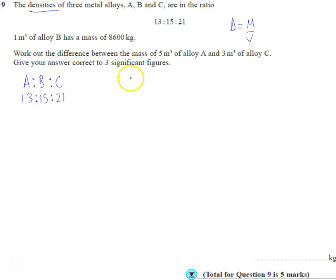So if we consider B, if we consider the density of B of what they've given us, of the one meter cubed, the density is the mass, 8600 divided by one, which is 8600 kilograms per meter cubed. So we know that B represents these 15 parts of this ratio. So if I take the 8600, well first of all that was the density of B, wasn't it? If I take the 8600 and I divide it by 15,